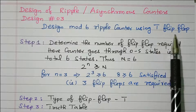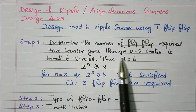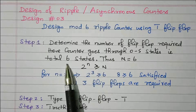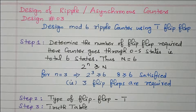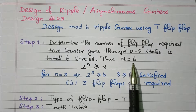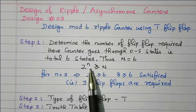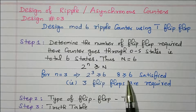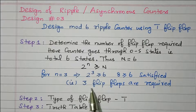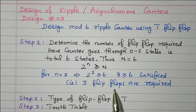It is clearly given that we need to use the T flip-flop. Step 1: determine the number of flip-flops required. The counter goes from 0 to 5, so total 6 states are available — capital N equals 6. To find the number of flip-flops, the condition is 2 to the power n greater than or equal to N. Taking n equal to 3: 2 to the power 3 equals 8, which is greater than or equal to 6. The condition is satisfied, so 3 flip-flops are required.